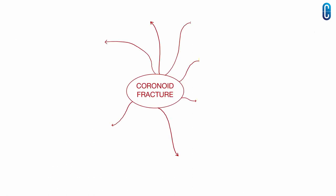Now we will have a quick recap of coronoid fractures. In anatomy, the coronoid process is a part of the anterior portion of the proximal ulna and it helps to improve ulno-humeral stability. It has an upper surface, antero-inferior surface, a medial surface, and a lateral surface.